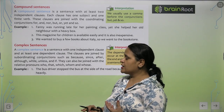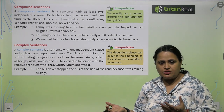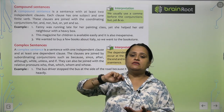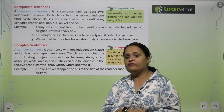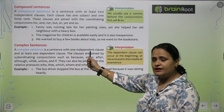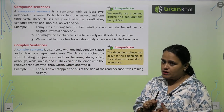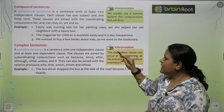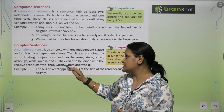Now, what are complex sentences? As you have already learned, a simple sentence has one independent clause with a subject and a finite verb, making complete sense. A compound sentence has two independent clauses, each with one subject and one finite verb. A complex sentence is a sentence with one independent clause and at least one dependent clause. These clauses are joined by a subordinating conjunction.